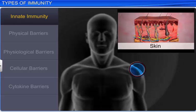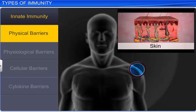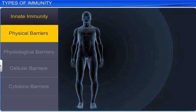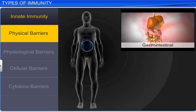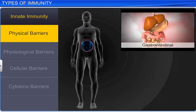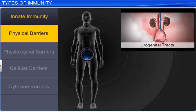The skin on our body is the main physical barrier to the entry of microbes. The mucus coatings of the epithelial lining of the respiratory, gastrointestinal, and urogenital tracts inside the body are also physical barriers to microbes, as they trap them.